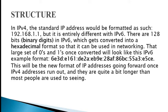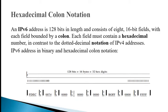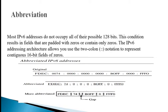To make addresses more readable, IPv6 uses hexadecimal colon notation. In this notation, the 128 bits are divided into eight sections, each 16 bits in length. Hexadecimal notation is required, so the address contains 32 hexadecimal digits with every four digits separated by a colon. An IPv6 address is 128 bits in length and consists of eight 16-bit fields, with each field bounded by a colon. Each field must contain a hexadecimal number, in contrast to the dotted decimal notation used in IPv4.